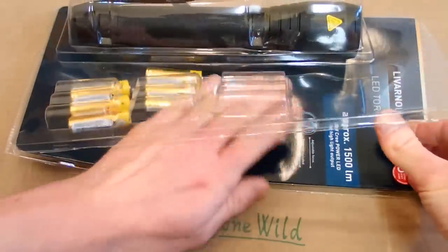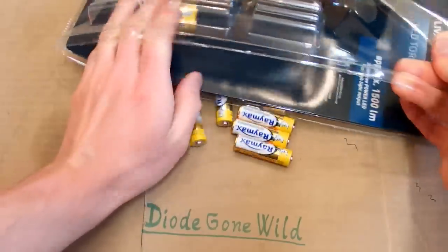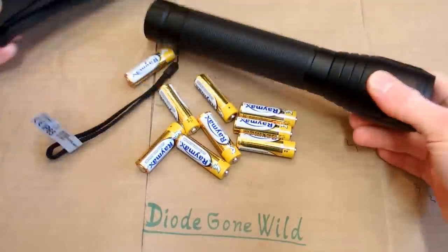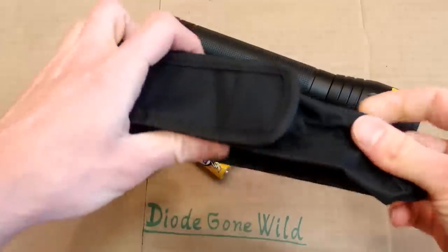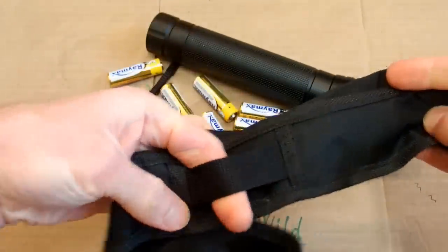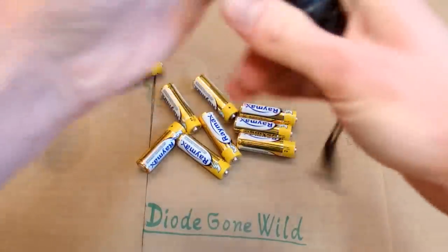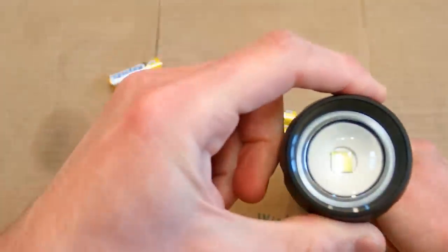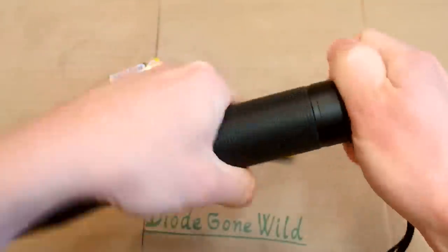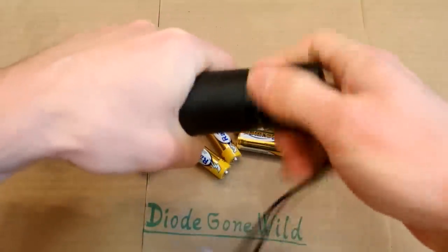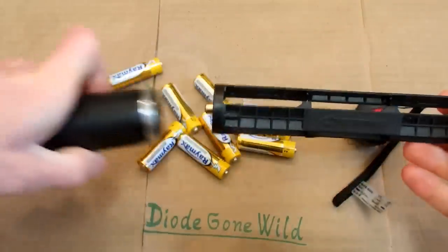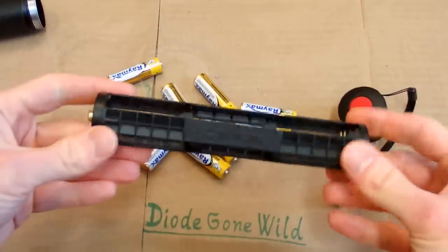It uses nine AA batteries and here's the flashlight which is quite big. It looks quite nice and it comes with this protective case for it. Here's the flashlight with a big LED in it. It's zoomable and it opens here. Here's the switch and here's the battery holder for nine AA batteries.